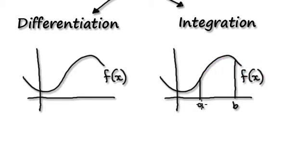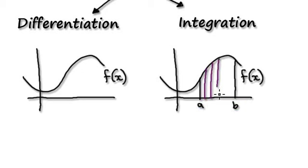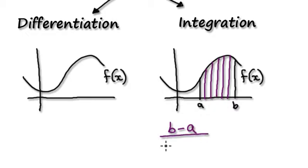The way we do that is to split this up. Let's say this is a and b here. So we split the interval from a to b into lots and lots of small strips, and then we add up all the areas of those strips.